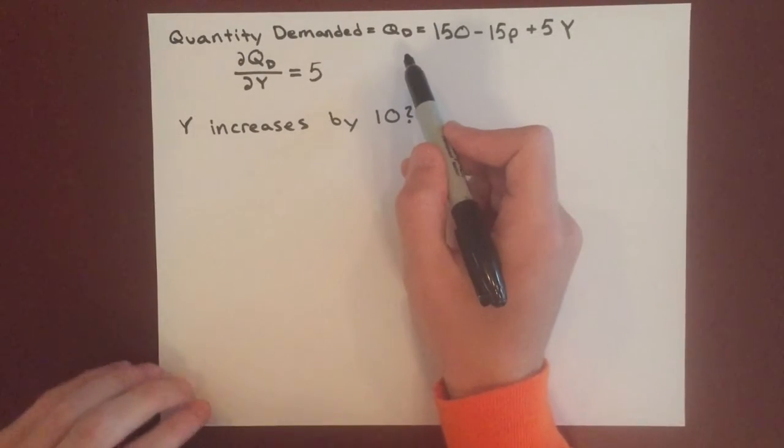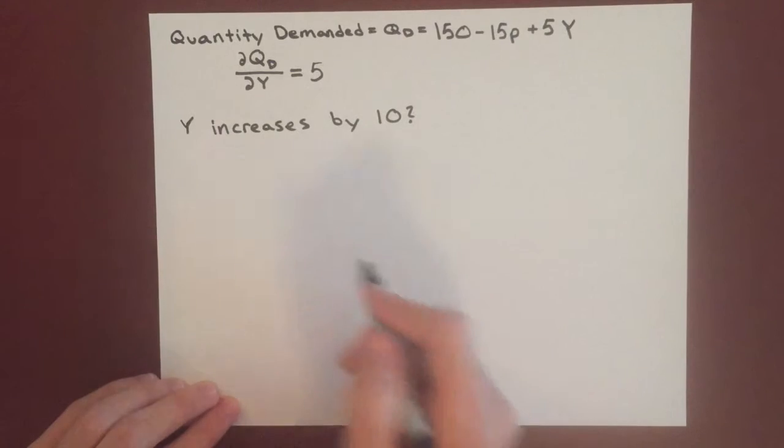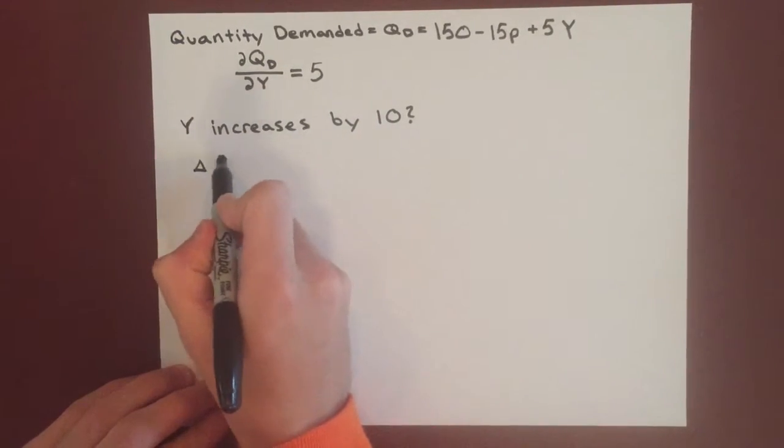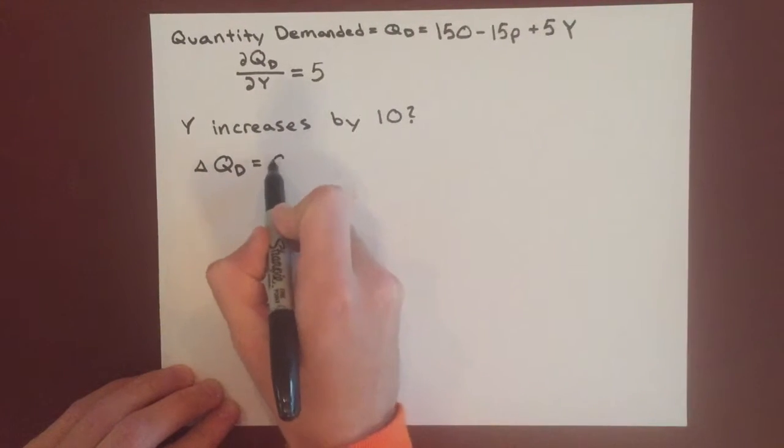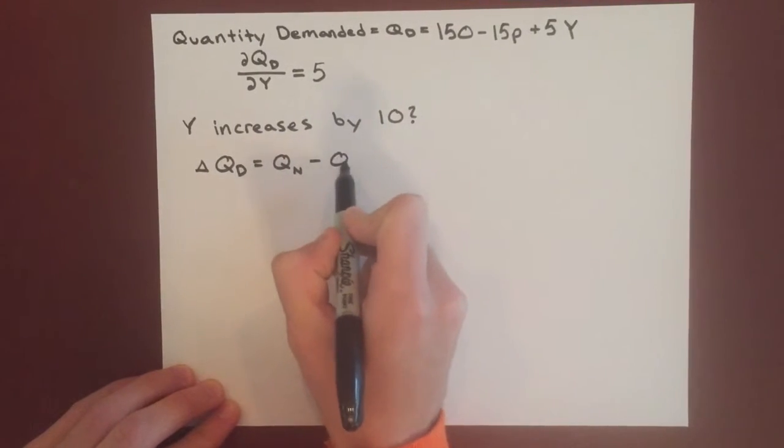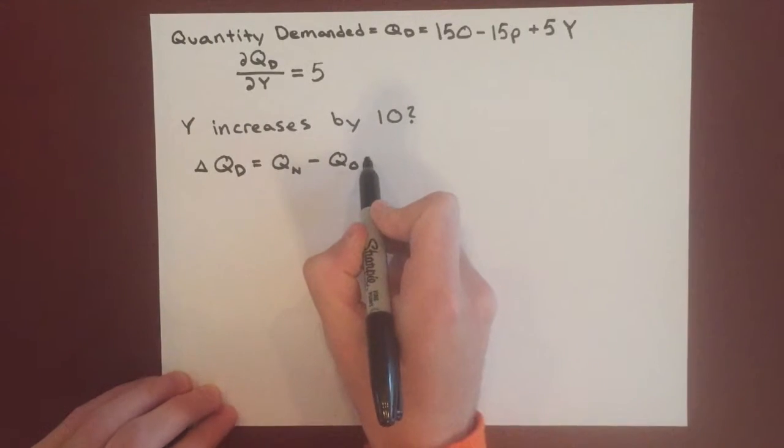However, you can also look at this, just to be safe, we can write this out and say the change, we use this delta to say change, change in quantity demanded equals quantity new minus quantity old. We use the n and the o there to differentiate them.